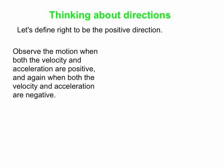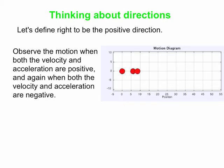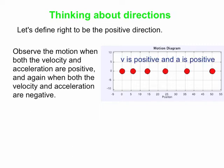We're going to observe motion when both the velocity and the acceleration are positive. The velocity is directed to the right, because that's our positive direction, and the acceleration is also to the right. Here we see a motion diagram with the dots left behind at regular time intervals, and the space between the dots is getting larger and larger as time goes by, which is consistent with the velocity increasing to the right. So that's when V is positive and A is positive.